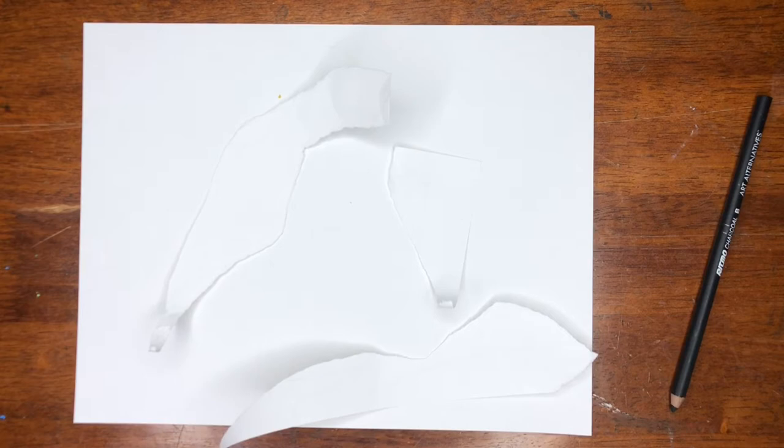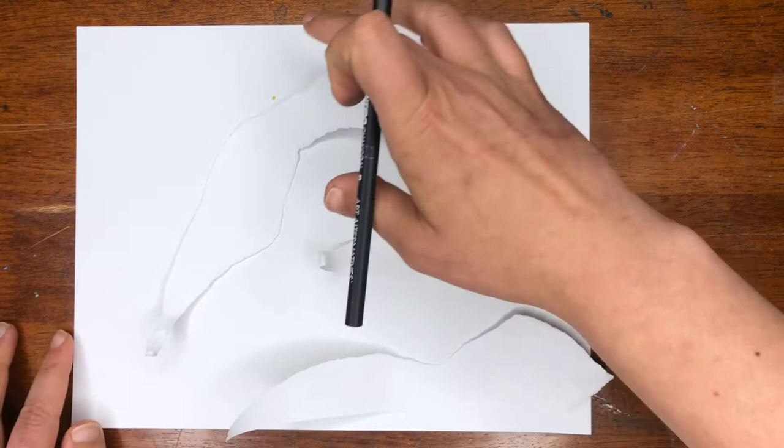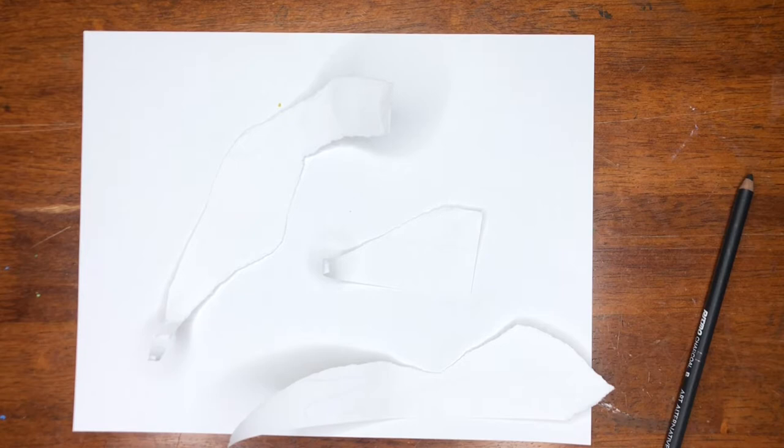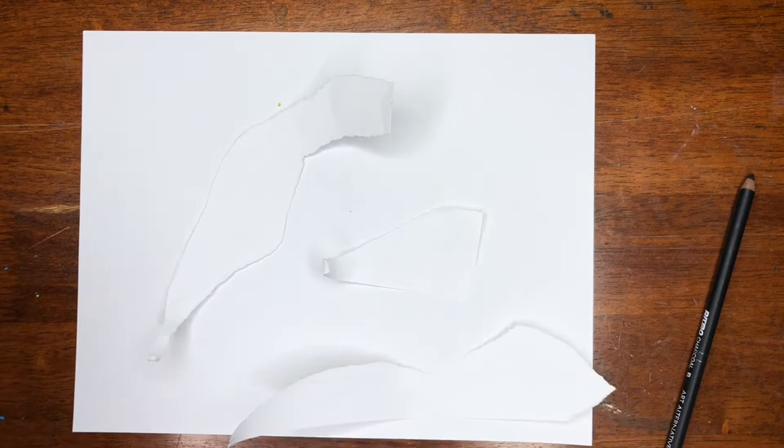Then we're going to be taking our charcoal and we're going to be rubbing our edges. Now you could use tape along your edge so that way you don't have the smudging going everywhere. It is nice to control your edge, but this is not necessary.